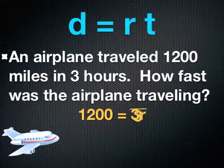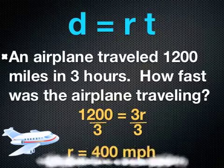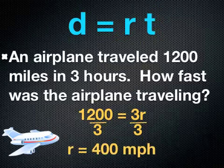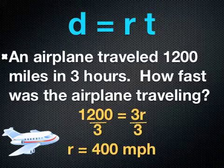To solve for r, I need to divide by 3 on both sides. When I divide by 3 on both sides, I find that the rate is 400. And where I get miles per hour from is because it tells me that the distance was 1,200 miles, and it tells me that the time was 3 hours. So I need to put together miles and hours to find my rate, which is miles per hour.